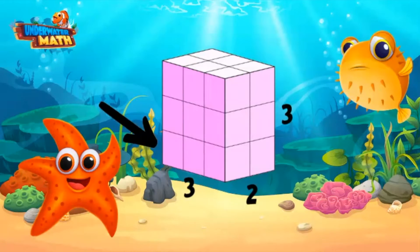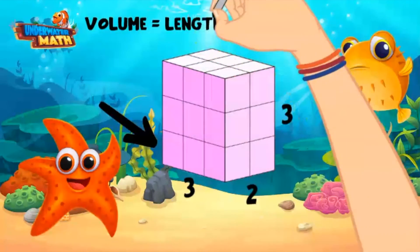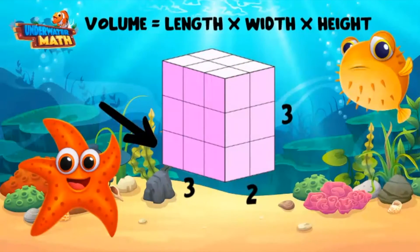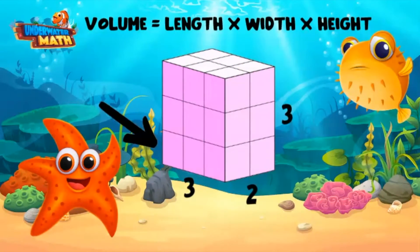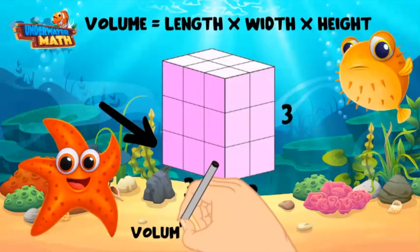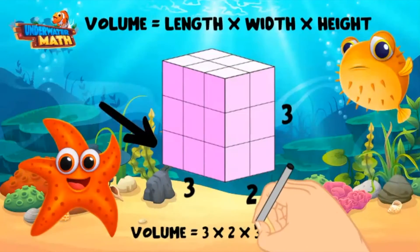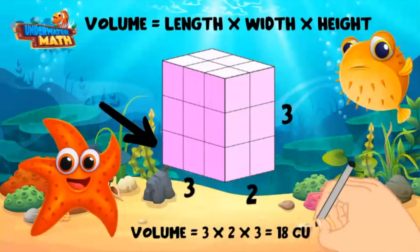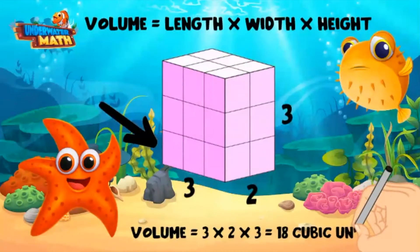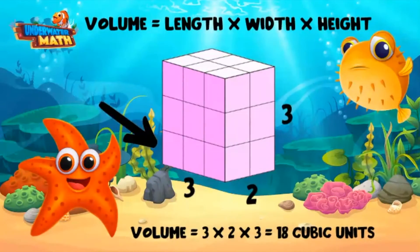All together I used 18 cubes to make this prism. Nicely done! Did you know you actually just calculated the volume of the prism? The formula to calculate volume is length times width times height. The length is three, the width is two, and the height is three. Three times two times three equals 18 cubic units — cubic units because they are unit cubes.